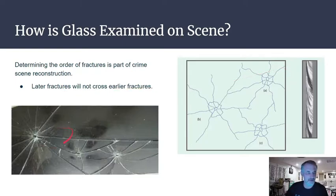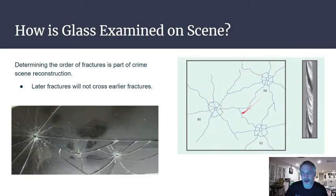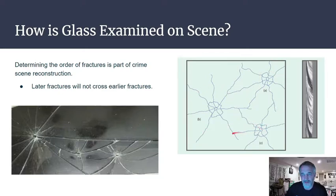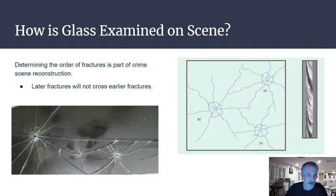To determine the order of fractures — important in crime scene reconstruction — remember that later fractures will not cross earlier fractures. Looking at fracture points A, B, and C: if B is not crossed by A or C, B occurred first. Then A occurred, then C. You can put fractures in sequence this way relatively easily.